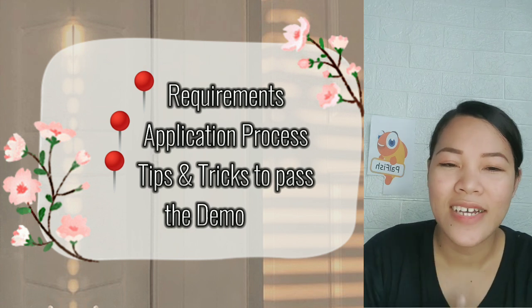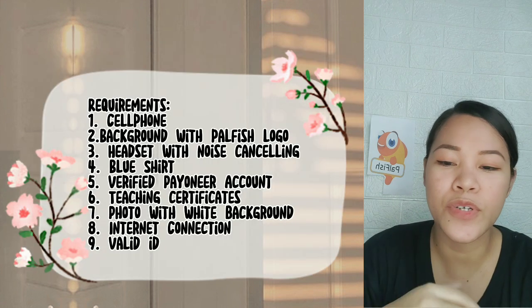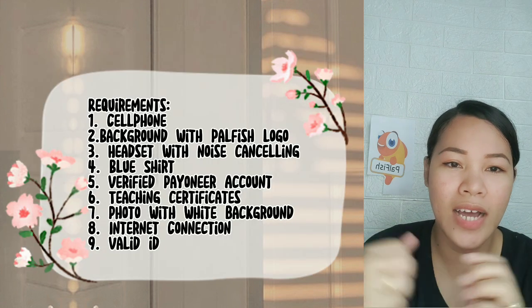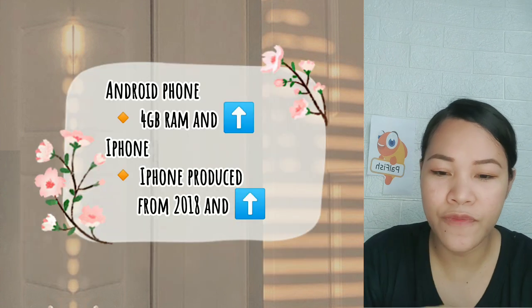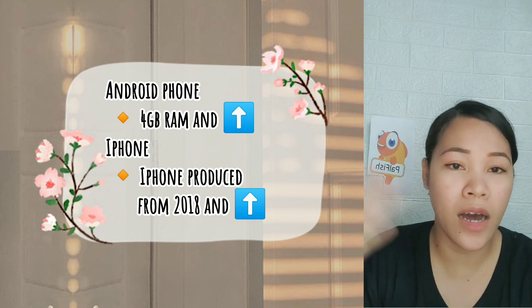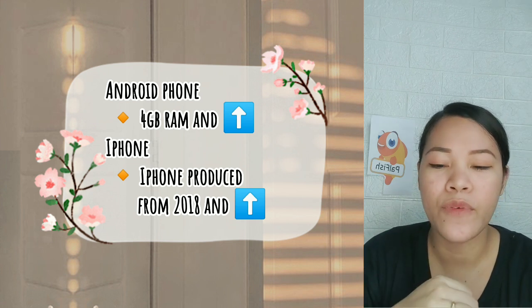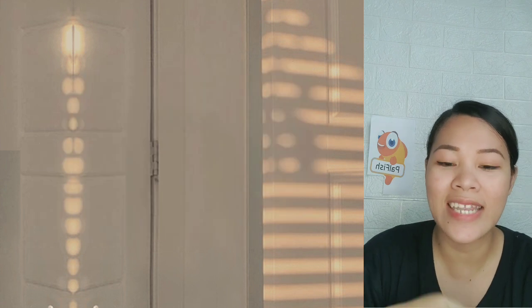Let's start with the requirements. First, you have to have a cell phone — you can have an Android phone or an iPhone. For Android, you need 4GB RAM and up, and for iPhone it should be from 2018 and up. It should also have a working camera.